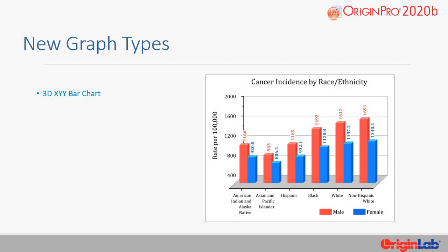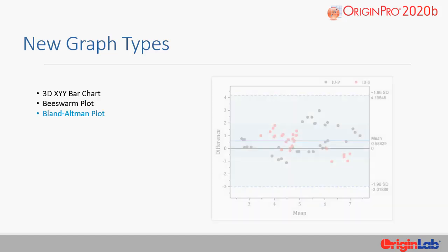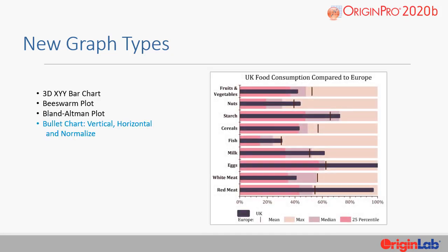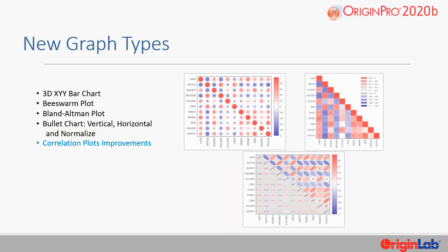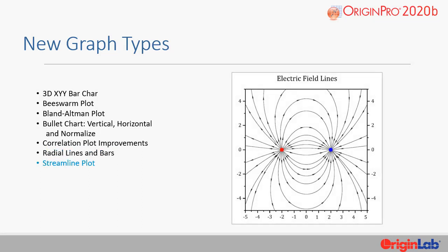New graph types in Origin 2020 B include 3D XYY bar charts, B-swarm plot, Bland-Altman plot, bullet charts with vertical, horizontal, and normalized settings. Improvements to correlation plot variations have been added and are available through a new app called the correlation plot app, as well as radial lines and bars, and streamlined plots.